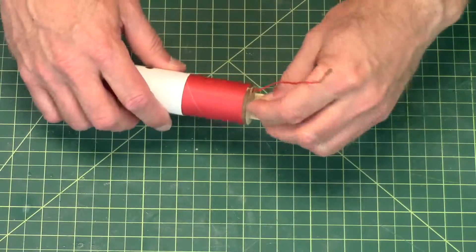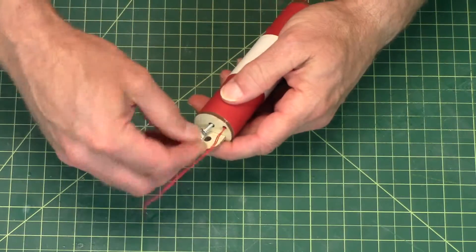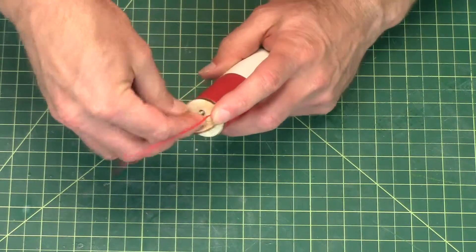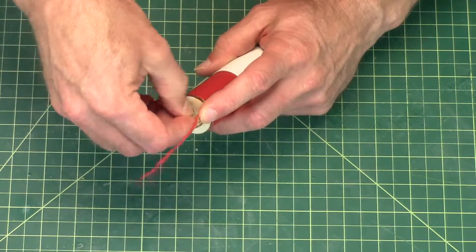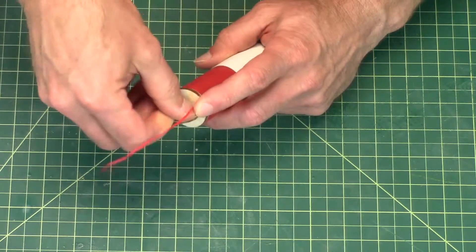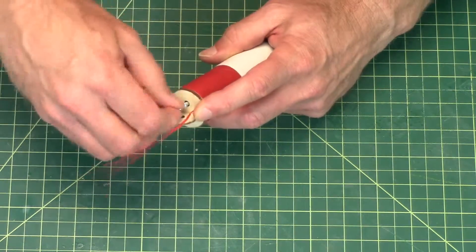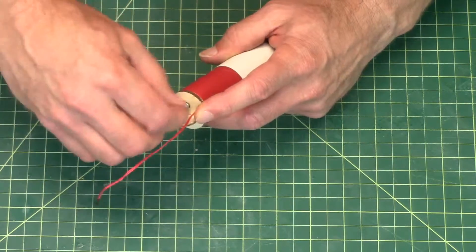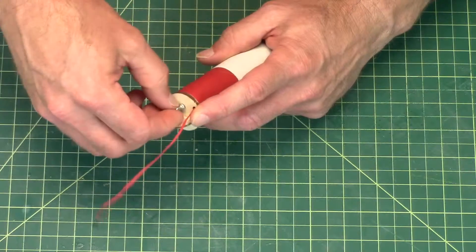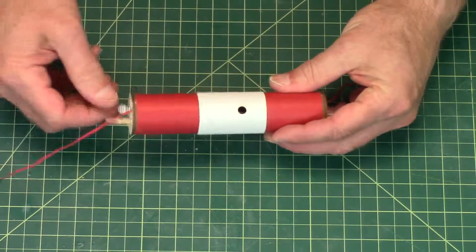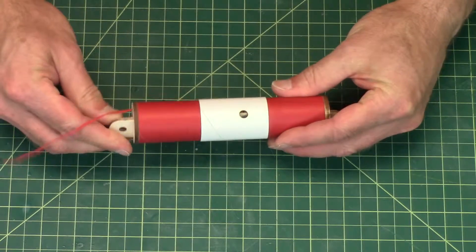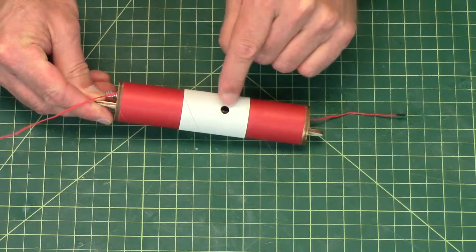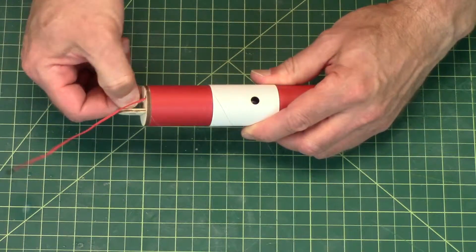And the thumb screw just goes in there like this. Just get it started into the weld nut on the inside. Okay, before you tighten it down too tight, again we're going to spin this around. This time we're going to look inside so we can see our switch button right there. And so once you find it, then you can go ahead and tighten it down.